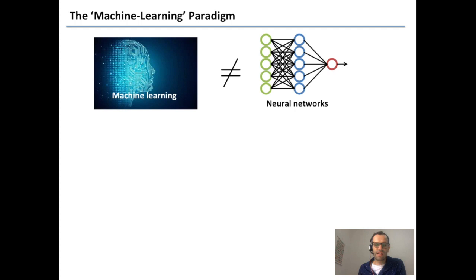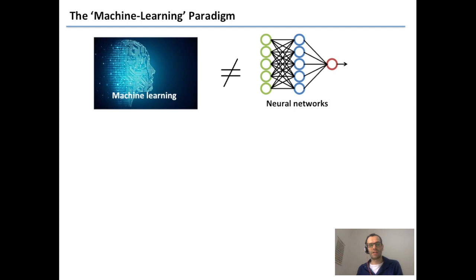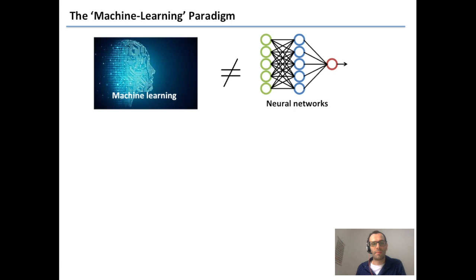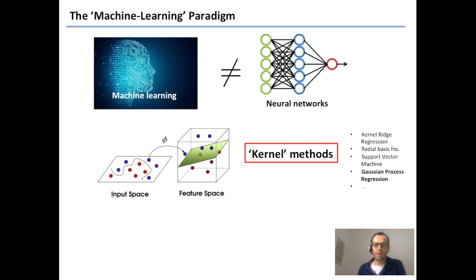Something that's sometimes lost on newcomers to the field is that machine learning does not mean neural networks. Neural networks are one very successful — some would say dominant — paradigm within machine learning, but there are many other ways to have a non-parametric flexible model for high-dimensional functions. These models have been used successfully in many areas, including condensed matter for parameterizing force field models where your phase space is atomic configurations. The main alternative to neural networks for modelling high-dimensional functions is via something called kernel methods.